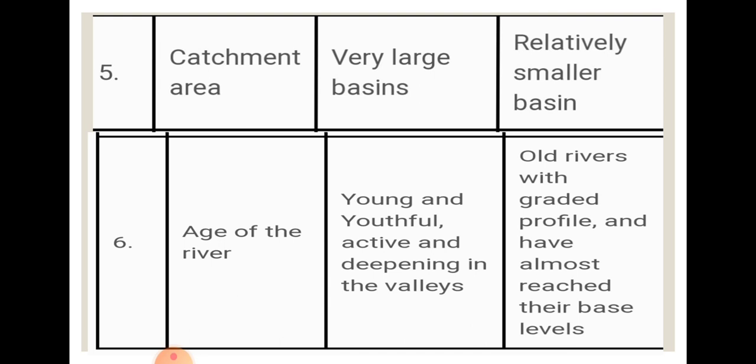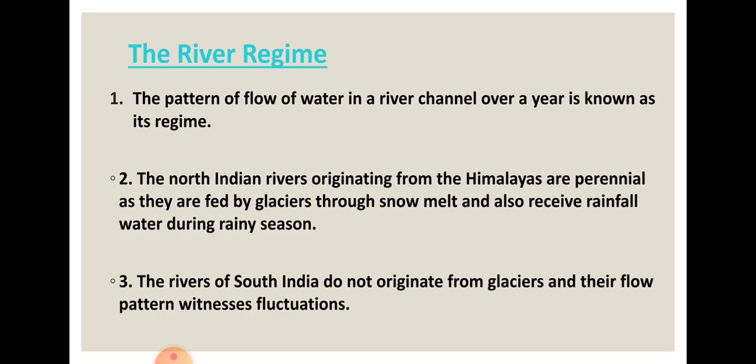Regarding catchment area, Himalayan rivers have a large catchment area while Peninsular rivers have a smaller catchment area. In terms of age, Himalayan rivers are young, youthful, and active rivers that form V-shaped valleys. Peninsular rivers are old rivers that have almost reached their base level and do not form large valleys.